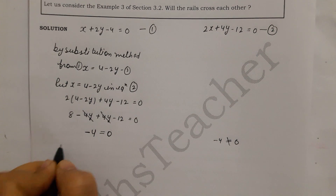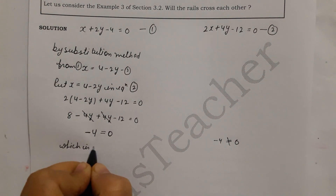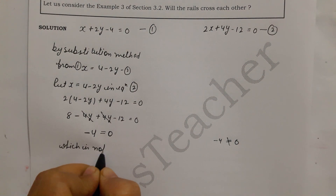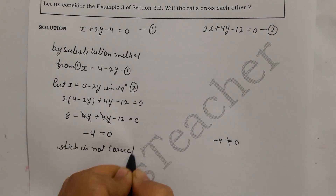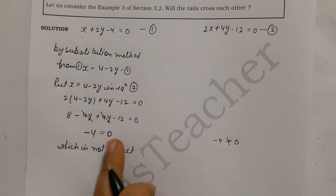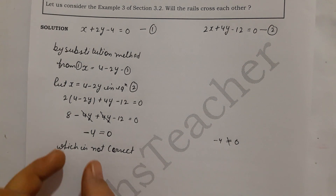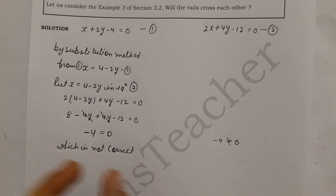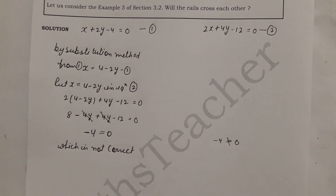Since the resulting statement −4 = 0 is not correct, it means we have no common solution. This statement is incorrect, and therefore we have no solution for these two equations.